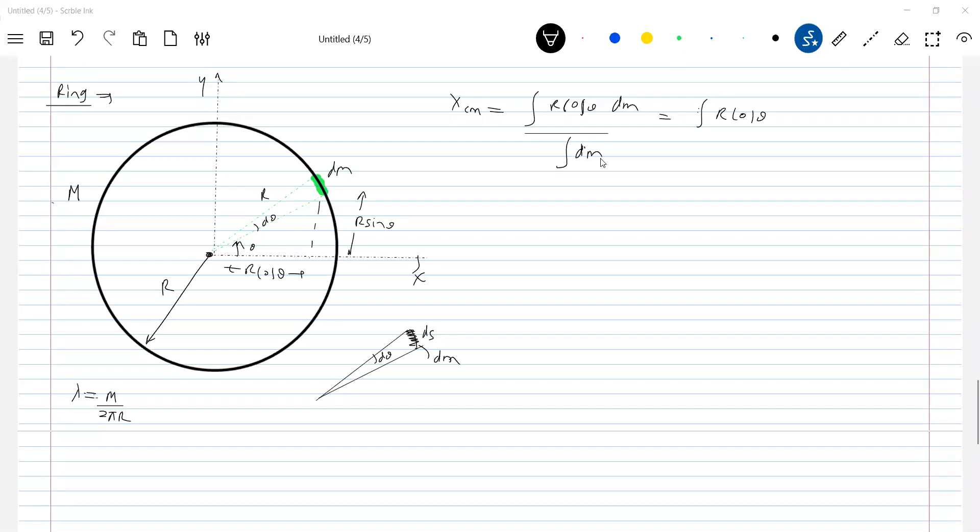DM what you can write. What we can write it as lambda into ds. So this should be equal to total mass of the ring. Now further R cos θ lambda. What is ds? R dθ arc length. Integral of cos θ dθ. Tell me what should be the θ dθ.